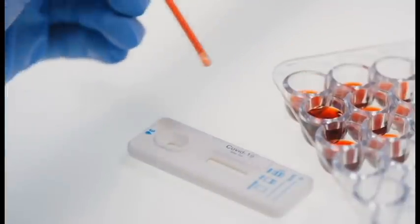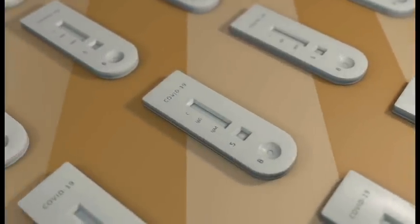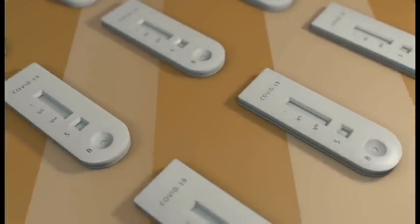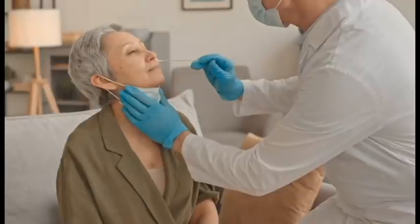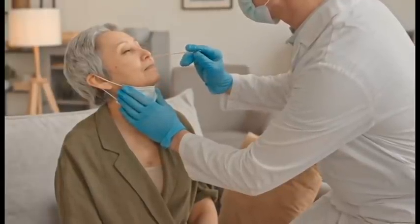Are other tests capable of detecting Omicron? Rapid tests may only show a positive or negative result, but won't show you what variant got you sick. So, PCR tests are for confirmation while genetic sequencing is used to determine the variant.